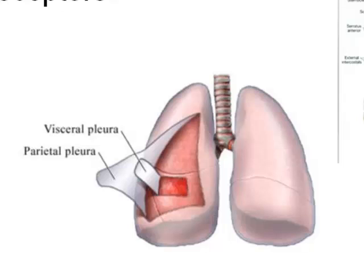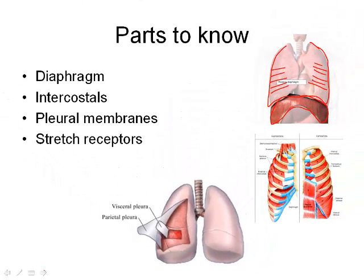Stretch receptors — we mentioned this already — they're the ones that are able to tell our lungs to stop inhaling. And then also we have chemoreceptors, which will be a big one near the end of the video. One thing quick about the pleural membranes: notice that you have two, and there's going to be a lubricant in between, so that when these lungs are inhaling and exhaling and continually rubbing against the outer rib cage, that friction is not going to wear them out. So here are those intercostals.